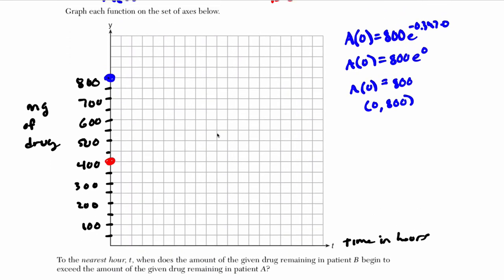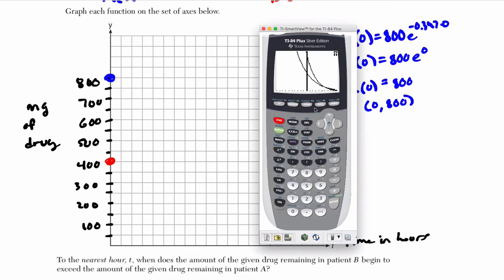So in the calculator, we can find that relatively quickly now. Once we have the graph, just hit second trace. Go to choice 5, which is intersect. And it sees this first curve. It just wants to verify which one is the first curve. We push up and down. You see here's my cursor. I'm toggling between them. Either one could be the first curve. I just want to go to the right so I can see it. There it is. Enter. Now it should automatically jump to the other curve. If it doesn't, press up or down. Enter. And then now it wants to guess.